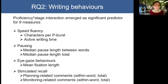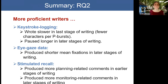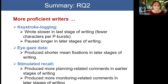We found that the proficiency-by-stage interaction was a significant predictor for nine measures: two speed fluency measures, pause length between words and in total, mean fixation length, and planning-related and monitoring-related stimulated recall comments — both within words and in total. More proficient writers wrote slower in the last stage of writing and produced fewer characters per P-burst. They also paused longer in later stages. More proficient writers produced shorter mean fixations in later stages, and stimulated recall comments showed that participants with higher proficiency produced more planning and monitoring-related comments in earlier stages, and more monitoring-related comments in later stages.